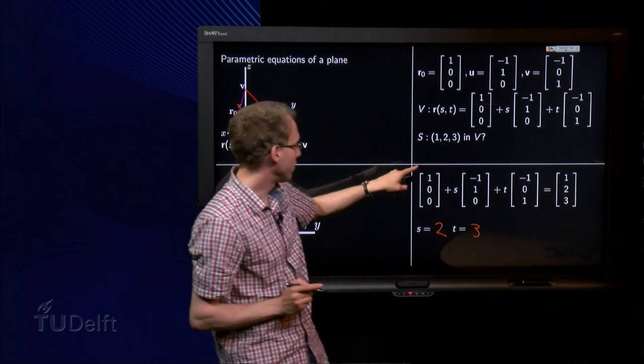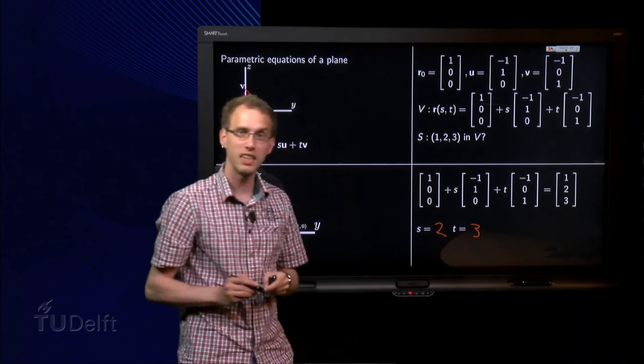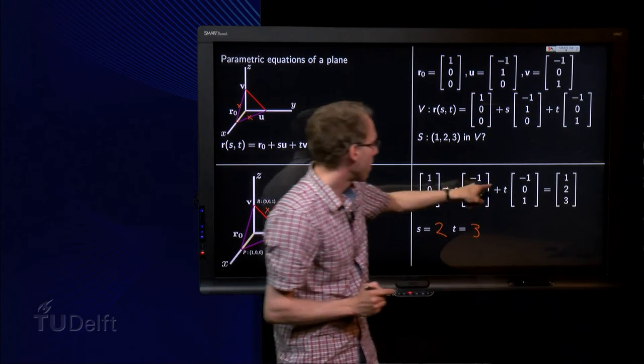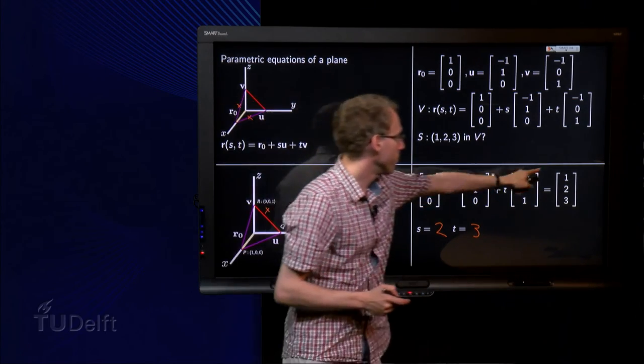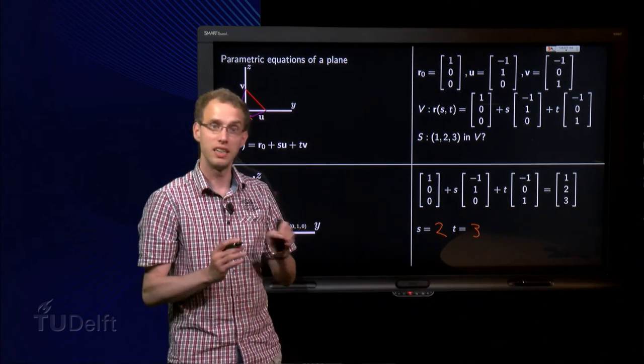But if we look now at the first equation, we get 1 minus s, so minus 1, minus t, so minus 3, equals 1. Minus 4 equals 1, that is not true.